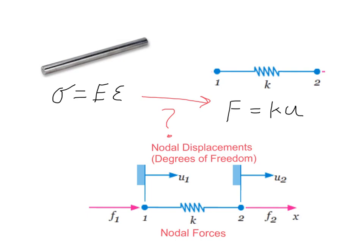A degree of freedom is an ability for a point to move. And the points that we're interested in are the nodes. In addition, I've labeled the f's as nodal forces. So these are important terms as we move forward.